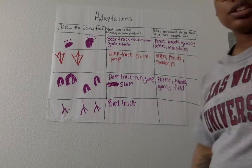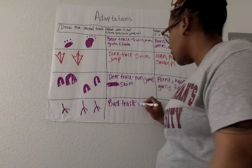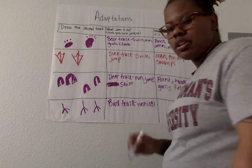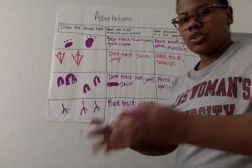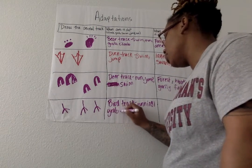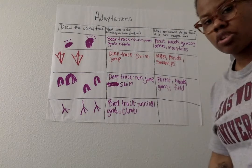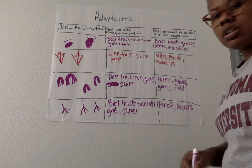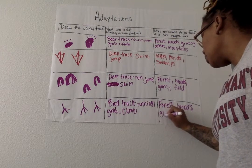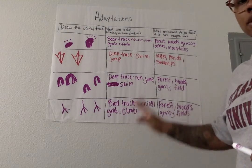What can chickens or birds do that has to do with climbing, grabbing, swimming, jumping, and running? We know that they run because when you try to catch them they run away. Chickens can also grab with their feet — and they also climb as well. Where would you most likely see a bird? In the forest, because forests have trees, woods, grassy areas. Just anywhere that has trees.